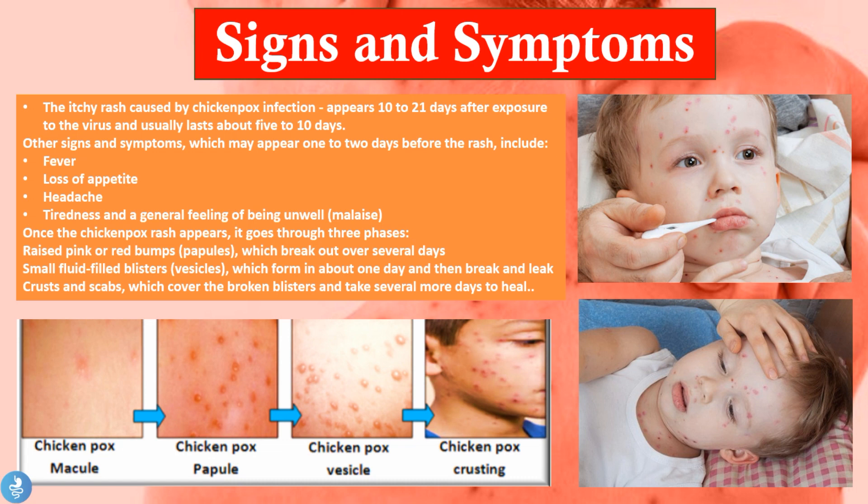Once the rash appears it takes about 5 to 10 days for it to run its course before it begins to disappear. Some other signs and symptoms which may appear one to two days before the rash include a fever, a loss of appetite, headache, and tiredness — the general feeling of being unwell, which is malaise.